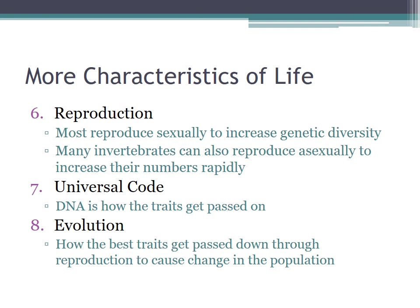The seventh characteristic is a universal genetic code. For most organisms that's going to be DNA, though some organisms are RNA-based and use a reverse transcriptase. DNA is how traits get passed on from one generation to another. The eighth characteristic is evolution — how the best traits get passed down through reproduction to cause change in the population. The most simple definition of evolution is change over time. For example, we have evidence to support that the human population has gotten taller and fatter over the last hundred years, and that's a fact we can prove with data.